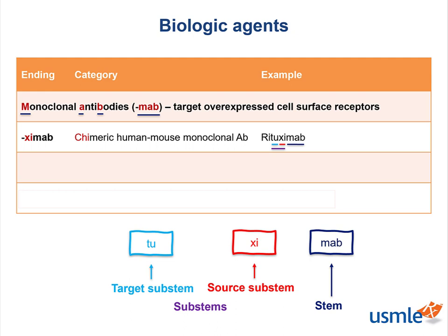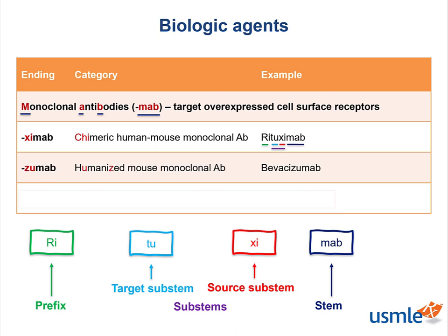Lastly for rituximab, the prefix 'RI' is variable. Looking at the next biologic agent in this table — bevacizumab — going from end to beginning: we know it's a 'mab', so it's a monoclonal antibody, with 'ZU' for its source stem, which stands for humanized, and 'CI' is the target substem, telling us there is some sort of cardiovascular type of target.